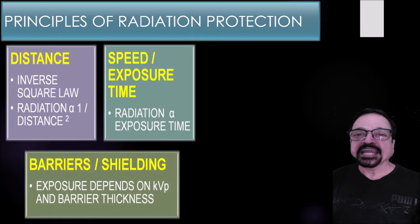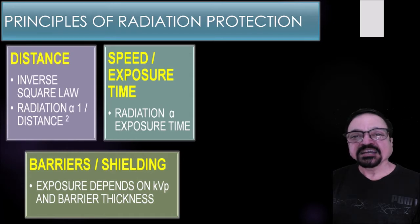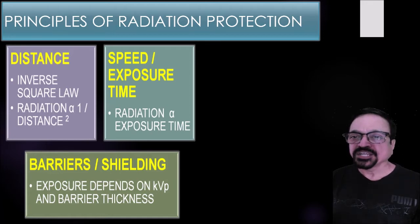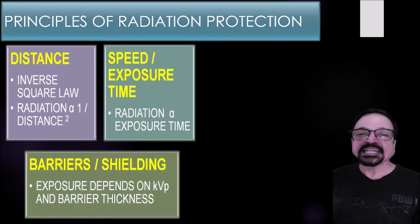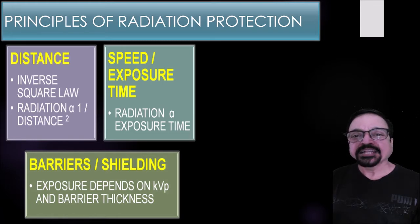What are the principles of radiation? We are repeatedly emphasizing these in most series because they are important. First is distance. Radiation follows the inverse square law — if the distance is doubled, radiation falls to one-fourth. If a technician is two to three feet away from the source, he receives only 20% of the radiation, and that too must be reduced with protection measures. Second is the speed of exposure — the time during which radiation is on should be minimized. Third are barriers and shielding used to protect the patient, vital parts, the technologist, and surrounding staff.